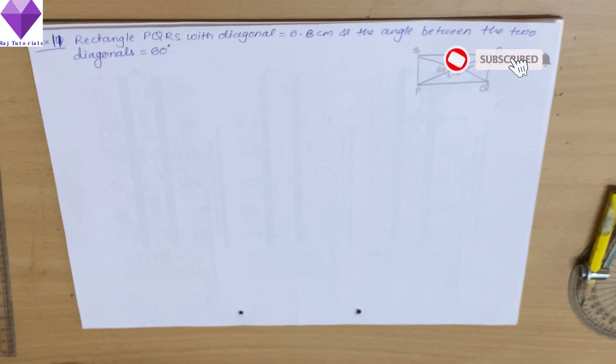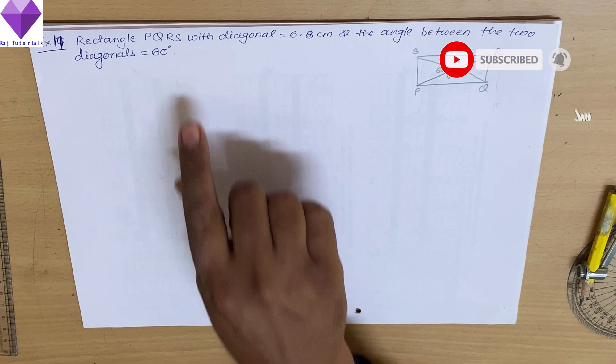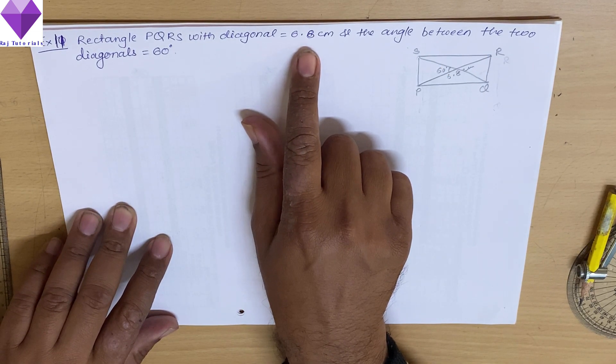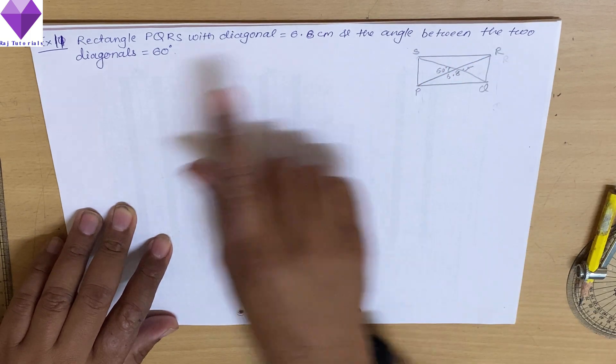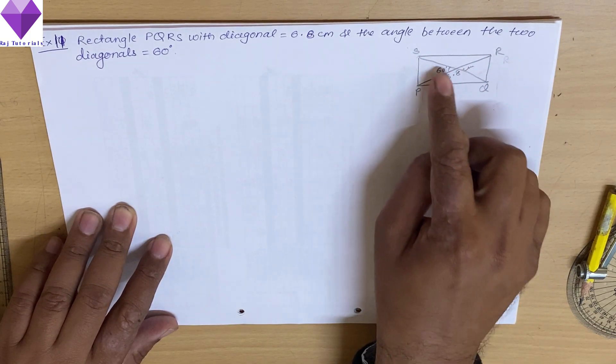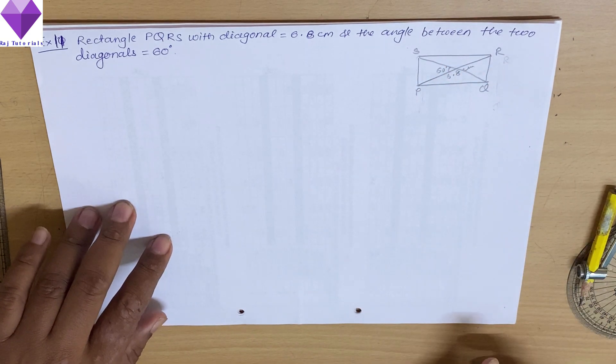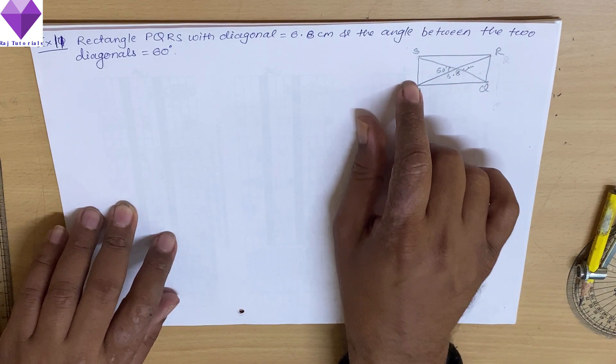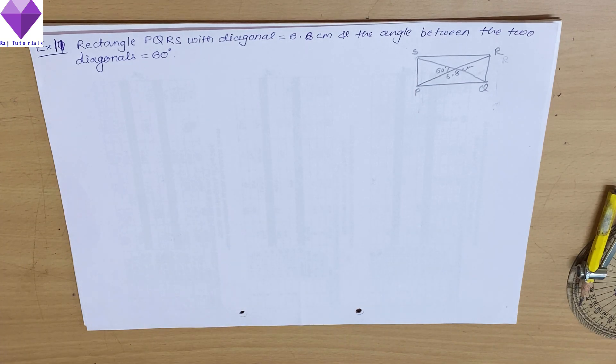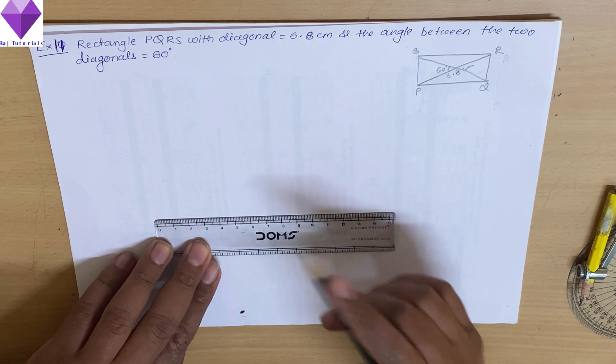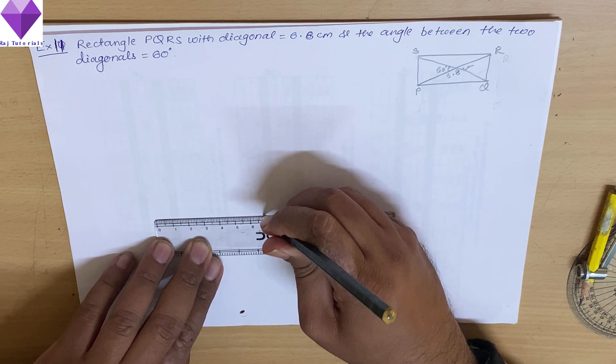Hello students, today we are going to draw a rectangle PQRS with diagonal 6.8 centimeters and the angle between the two diagonals is 60 degrees. So this angle is 60 degrees here and here. To draw it, first I have drawn the rough sketch. Now first of all I will draw PR of 6.8 centimeters. So first I am